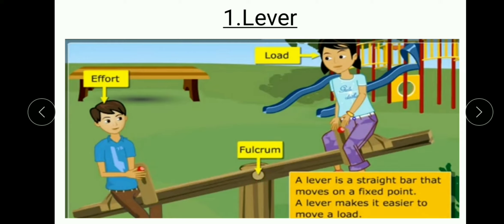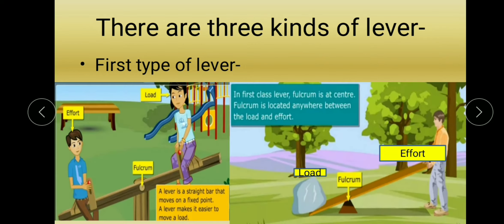Lever teen type ke hote hain. Fulcrum kya hota hai students? Jis base par lever tika hua hoga use hum fulcrum kehte hain. Effort kya hota hai? Jo force hum kaam karne ke liye lagaenge use effort kehte hain. Load kya hota hai? Jis saamaan ko lift karna hai ya push karna hai use load kehte hain. First type of lever mein fulcrum hamesha center mein hoga, rod ke ek point par load hoga, aur doosre point par hamesha effort lagaate hain.